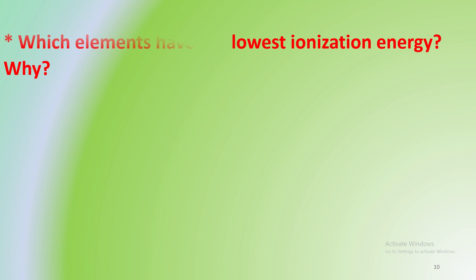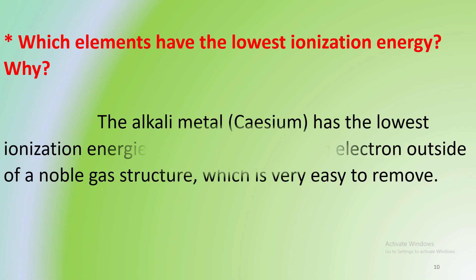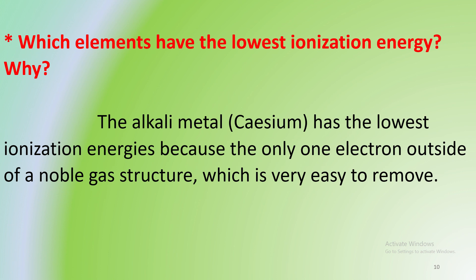Now, which elements have the lowest ionization energy? The alkali metals. The top-left border — Group 1 — has the lowest ionization energy. The alkali metals have an electronic structure like 2,8,1; only one electron is outside the inner shells, making it the easiest to remove, giving the lowest ionization energy.